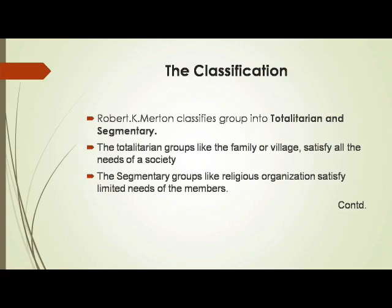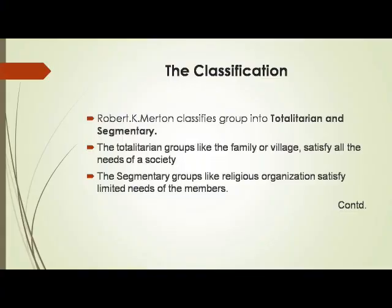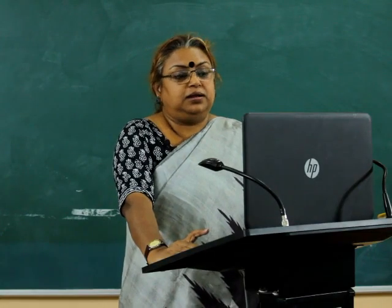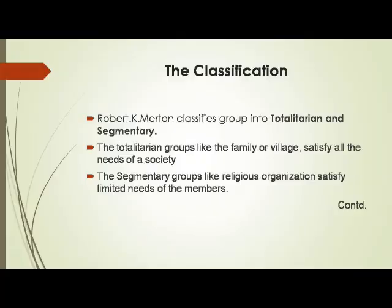Robert Cooley also classified groups into totalitarian and segmentary. Totalitarian groups, like the family or village, satisfy all the needs of a society — people satisfy their basic needs within the family. Whereas segmentary groups, like religious organizations, satisfy only limited needs of the members.